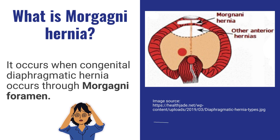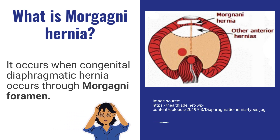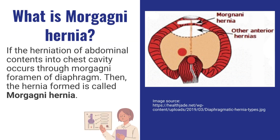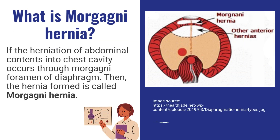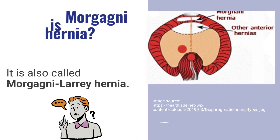It occurs when congenital diaphragmatic hernia occurs through Morgani foramen. If the herniation of abdominal contents into chest cavity occurs through Morgani foramen of the diaphragm, then the hernia formed is called Morgani hernia. It is also called Morgani-Lari hernia.